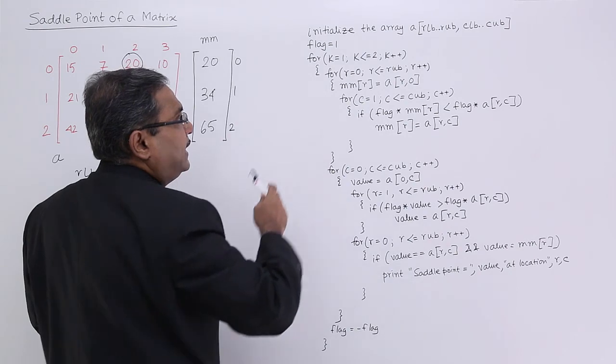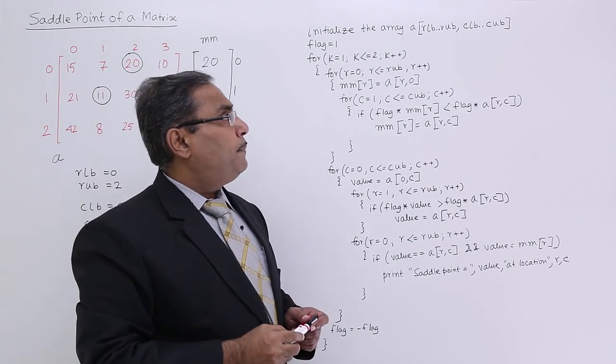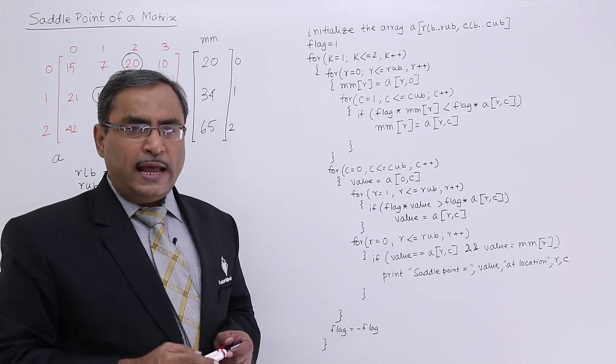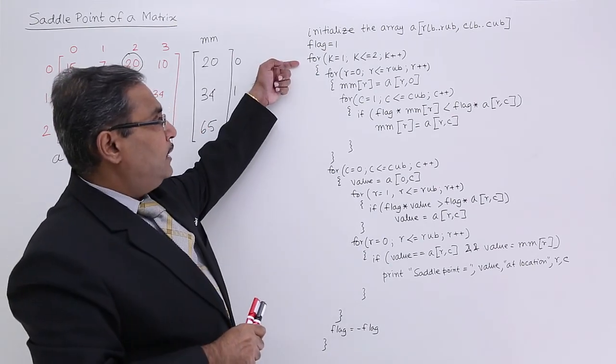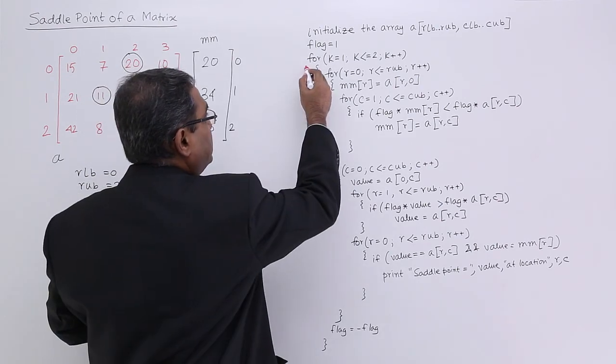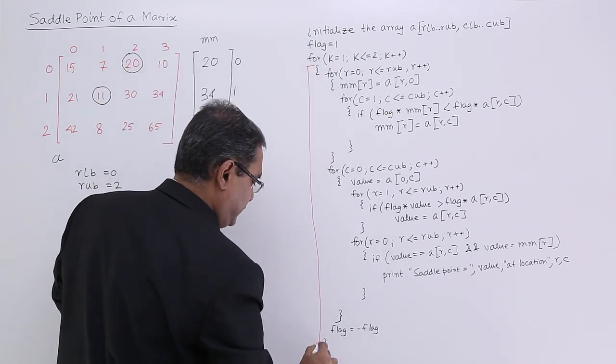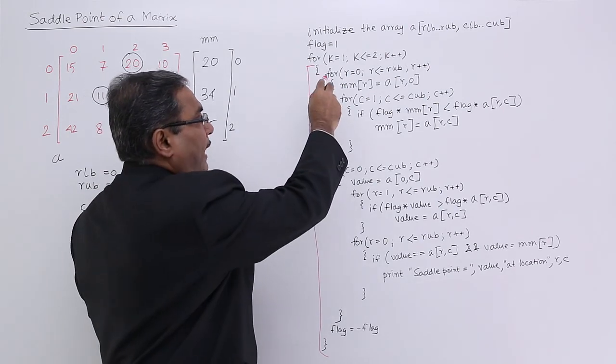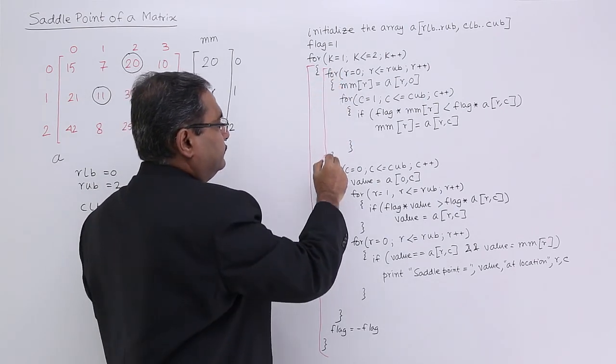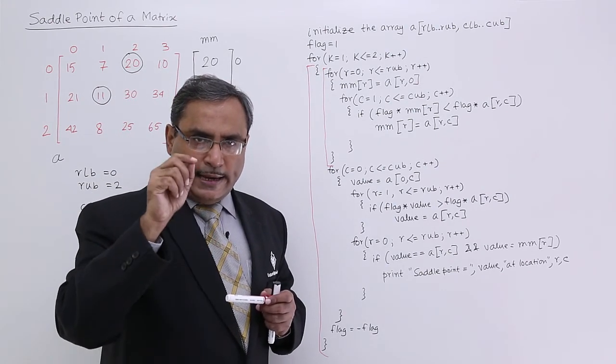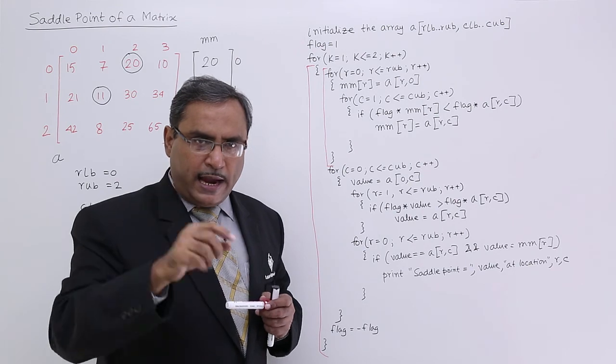Initial is the array A, R lower bound to upper bound and column lower bound to column upper bound. Flag is equal to 1 as we planned. For k is equal to 1 to 2 as we planned. This particular k loop is getting terminated here. Now you are calculating the row wise maximum in the first case, the row wise maximum and keeping it in the mm array.